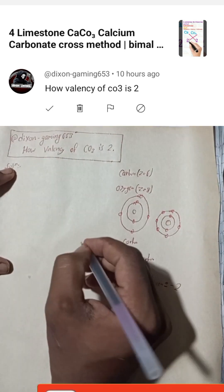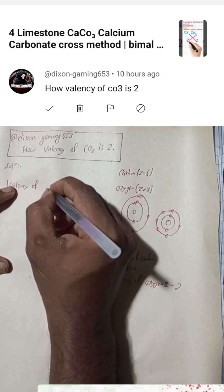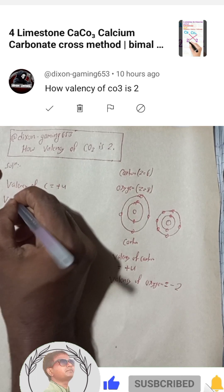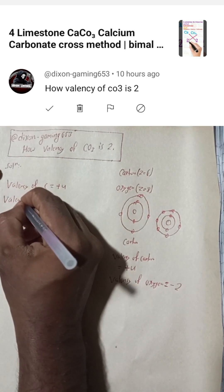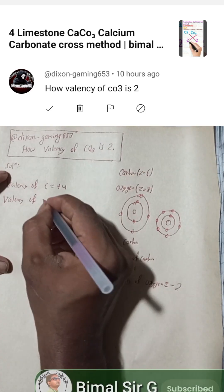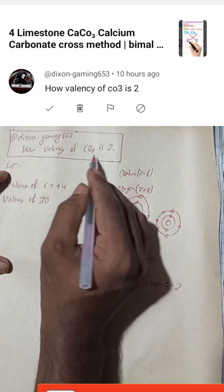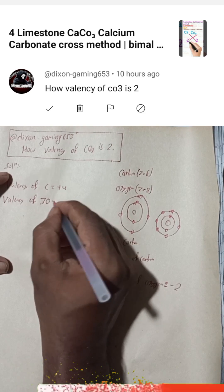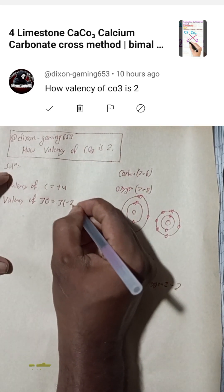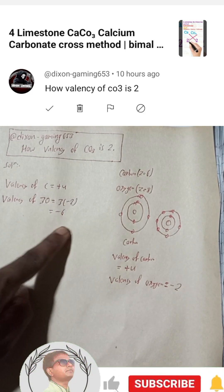Now we can write the solution. Valency of C is equal to plus 4. In CO3 there is O3, meaning there are 3 oxygen atoms. So 3O — the valency of O is minus 2, multiply by 3 — that is equal to minus 6. We get the valency of 3O as minus 6.